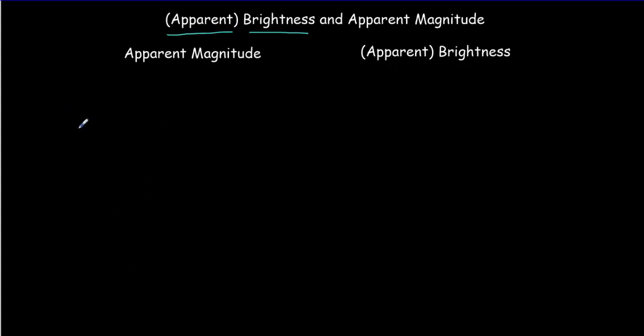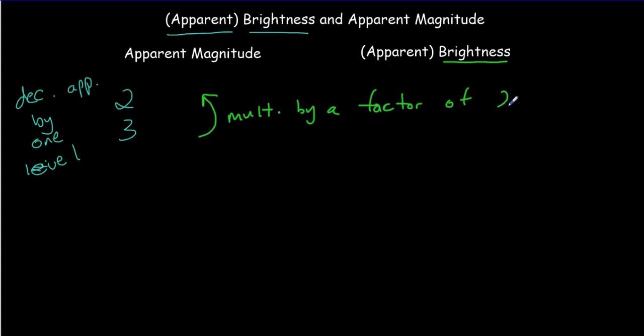Let's suppose that we decrease the apparent magnitude by one level. We ask the question, if we do that, what's going to happen to the brightness? Well, we know the brightness is going to increase.